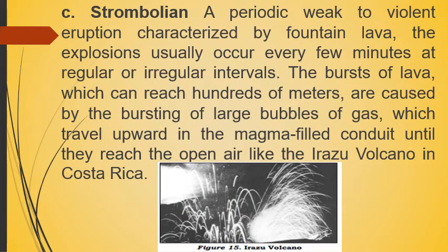C) Strombolian: a periodic, weak-to-violent eruption characterized by fountaining lava. The explosions usually occur every few minutes at regular or irregular intervals. The bursts of lava, which can reach hundreds of meters, are caused by the bursting of large bubbles of gas that travel upward in the magma-filled conduit until they reach the open air — like the Arenal Volcano in Costa Rica.